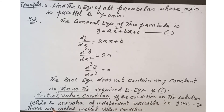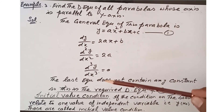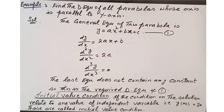Now, the initial value condition: a condition on the solution related to one value of the independent variable, that is y(x₀) = y₀, is called an initial value condition. By substituting the values x₀ and y₀ into the solution, we can find the constant of integration, and then substituting the constant back gives us the required particular solution. This is called an initial value problem.